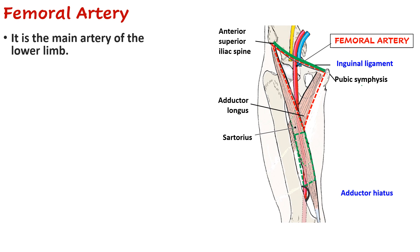The inguinal ligament is the green structure extending between the anterior superior iliac spine and the pubic tubercle. Now let us see how the femoral artery begins.